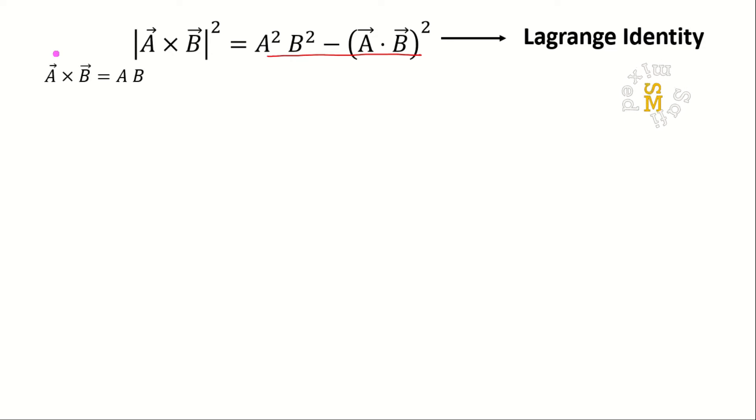We know from the definition of vector product that it is given by A B sin θ n̂, where A and B are magnitudes of the two vectors, theta is the angle between them, and n̂ is a unit vector perpendicular to the plane containing vectors A and B.